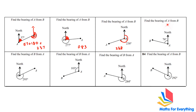Next: find the bearing of A from B. We draw the north at B and want to find this angle. These are co-interior angles — 180 minus 76 gives 104. So the bearing is 104. Note: if the angle is inside and above the north line, the bearing will be less than 180; if it's outside, it will be more than 180.